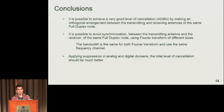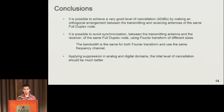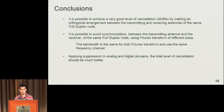Now I have some conclusions. It is possible to achieve a very good level of cancellation — up to 42 dBs — by making an orthogonal placement between the transmitter and receiver antennas of the same full duplex node. It is also possible to avoid synchronization between the transmitting and receiving paths on the same full duplex node by using Fourier transforms with different sizes (128 and 64). The bandwidth is the same for both Fourier transforms and we are using the same frequency channel. Applying additional suppression in analog and digital domains should make the total level of cancellation much better.